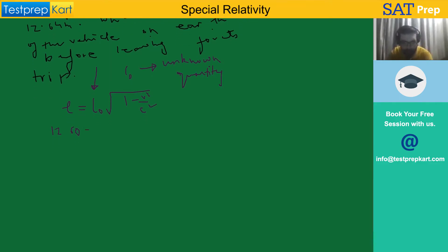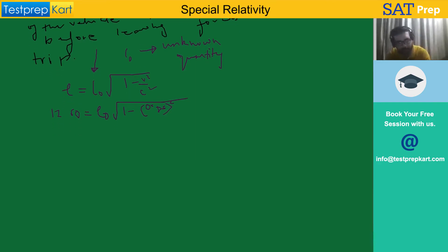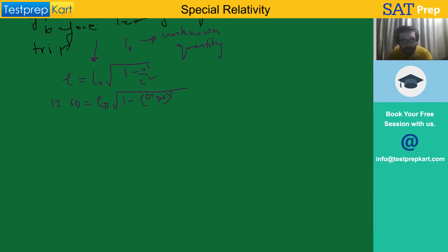So we have 12.64 equal to L₀ times under root of 1 minus 0.85 squared — c squared gets cancelled out. From this we can get L₀ is approximately equal to 24 meters.